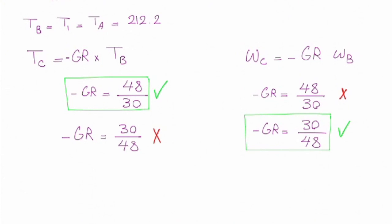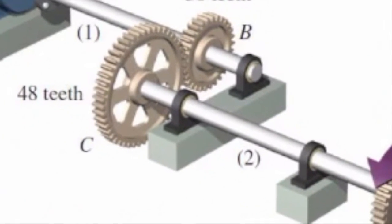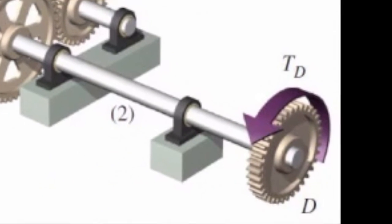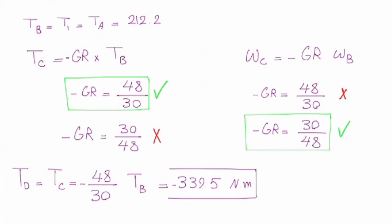I can solve the rest of this so the torque at D would be negative 48 over 30 times torque at B, and that gives me torque at C is equal to 339.5 Nm. That is torque at C. What is torque at D? I'm moving along a shaft. So the torque at D would be similar to torque at C. So that is the final answer. Does that make sense?